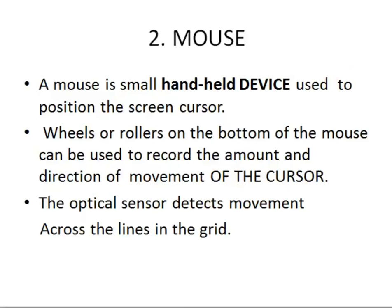The second device is mouse. A mouse is a small handheld device used to position the screen cursor. Wheels or rollers on the bottom of the mouse record the amount and direction of movement of the cursor — we record how much the mouse has moved and then relatively move the cursor or pointer. The optical sensor detects movement across the lines in the grid.